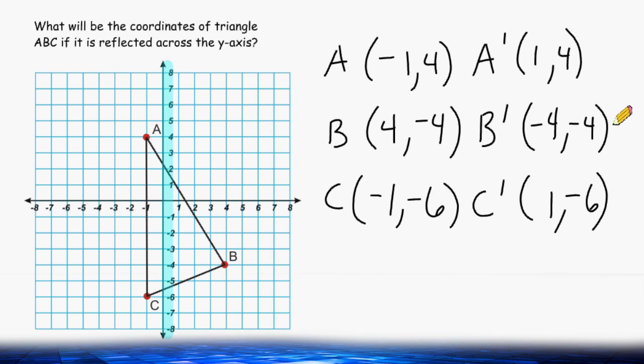Now let's plot these three points and see what our reflection looks like. So the new location of A is going to be at positive 1, positive 4, which is located right here.